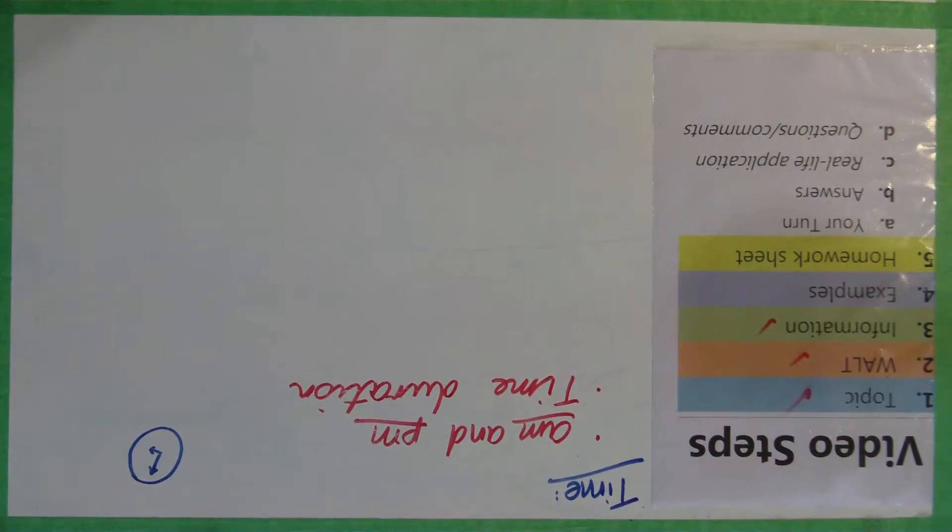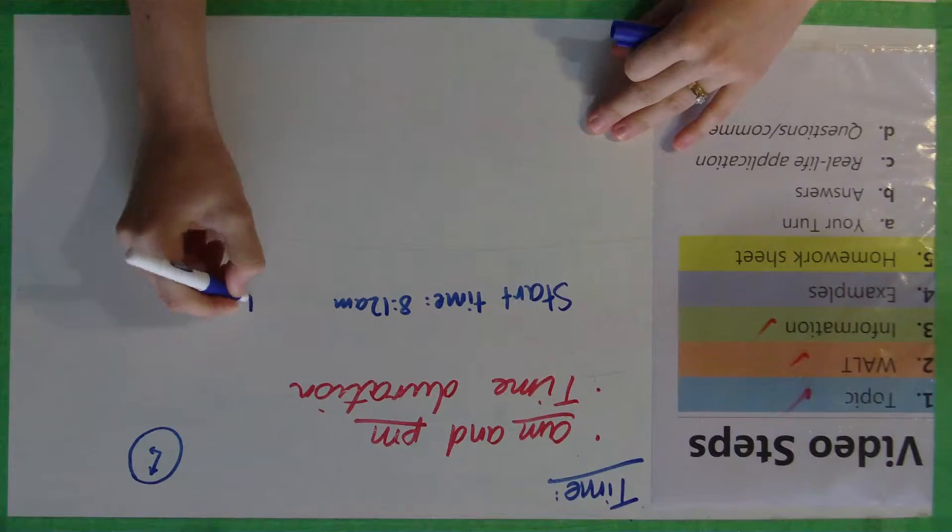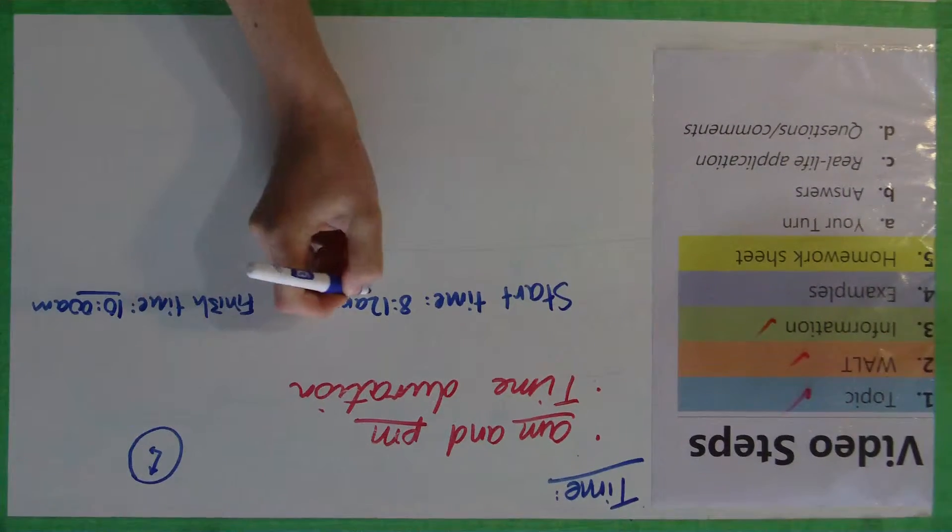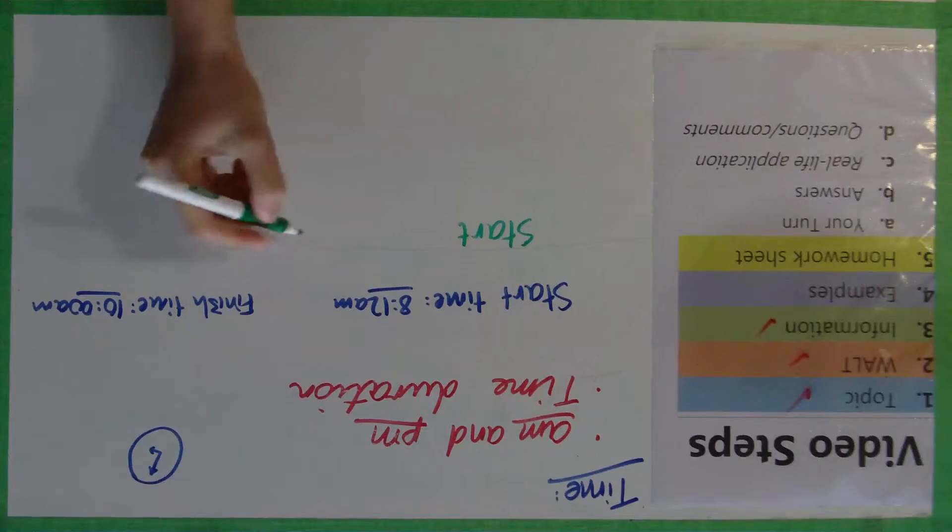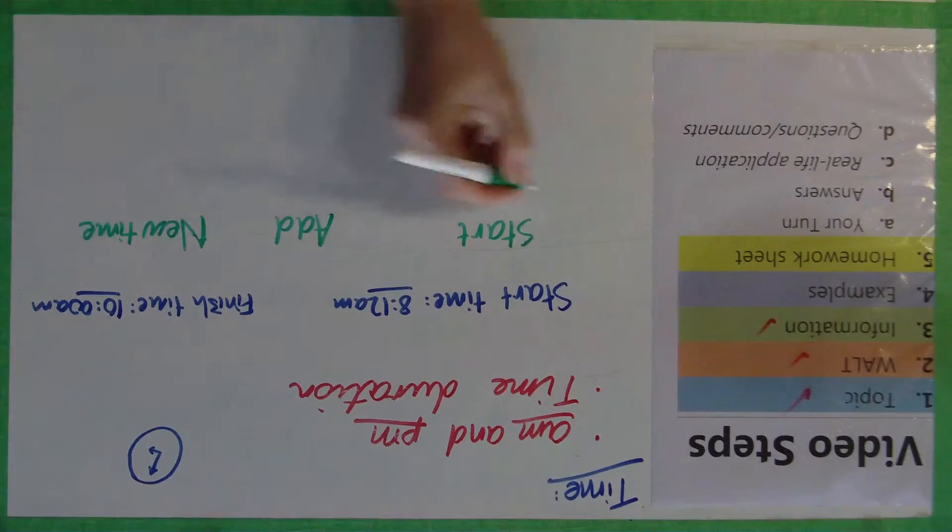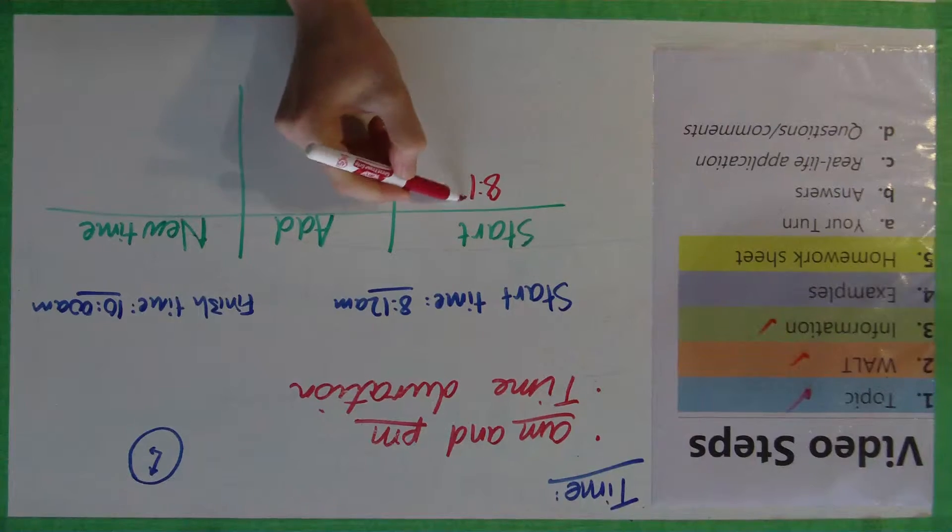So with this one here, I'm just going to use a little t-chart to show you. Hopefully it will make a little bit more sense. Now I'm going to show you two methods today. And it's just a matter of having a go at both of them on the homework sheet and then deciding which one you prefer. So I've got here start time is 8:12 a.m. And finish time is 10 a.m.